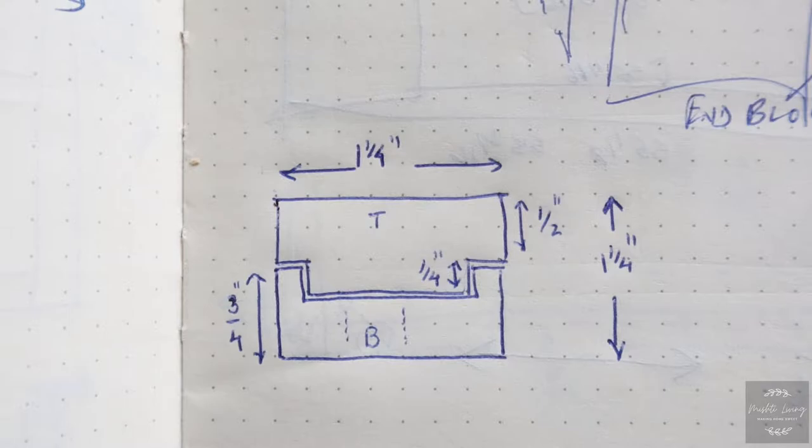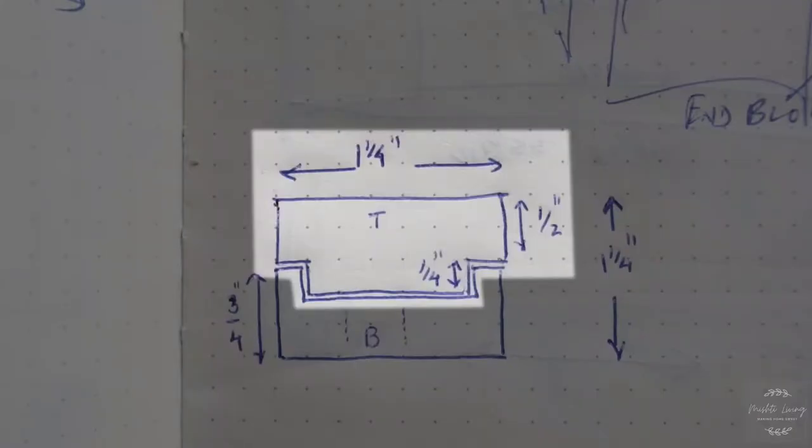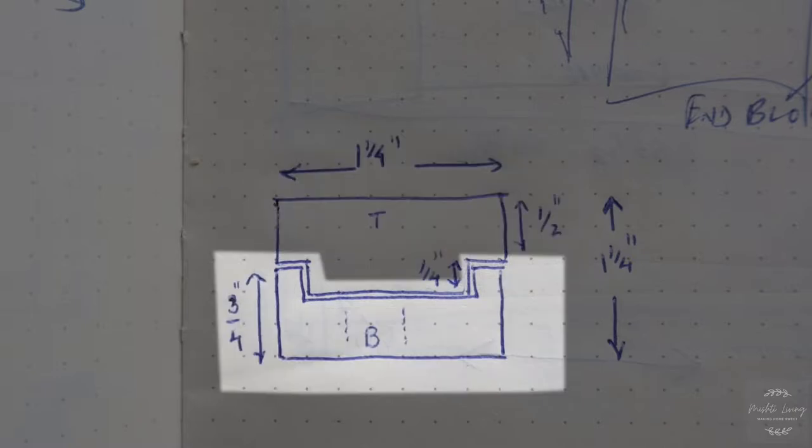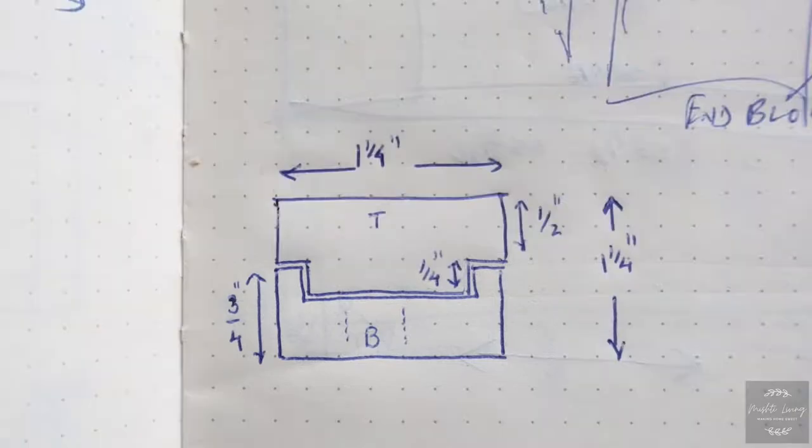I finally decided on this design. It's a two-piece system, tongue and groove, one and one quarter inch in width and the same height. The tongue on the top has these dimensions: half an inch, then the additional tongue is one quarter inch. The groove on the bottom height is three quarters of an inch, but when I put them together, the total height comes out to be one and one quarter inch.